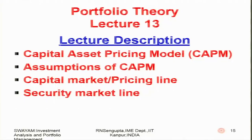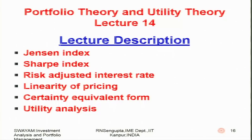Lecture 13 will cover portfolio analysis, specifically the capital asset pricing model (CAPM): its assumptions, the capital market line, the pricing line, and how the security market line provides information. Lecture 14 is the last part of portfolio theory and the beginning of utility theory. We will consider various portfolio performance indices — Jensen's index, Sharpe's index, the risk-adjusted interest rate formula, linearity of pricing, and certainty equivalent forms — and then begin with utility theory.